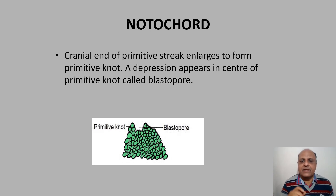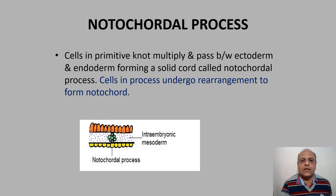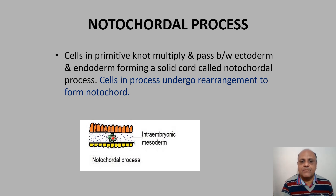The cranial end of the primitive streak enlarges to form the primitive knot, and a depression appears in its center called the blastopore. Cells in the primitive knot multiply and pass between ectoderm and endoderm, forming a solid cord called the notochordal process. So the notochordal process is formed from cells in the primitive knot.